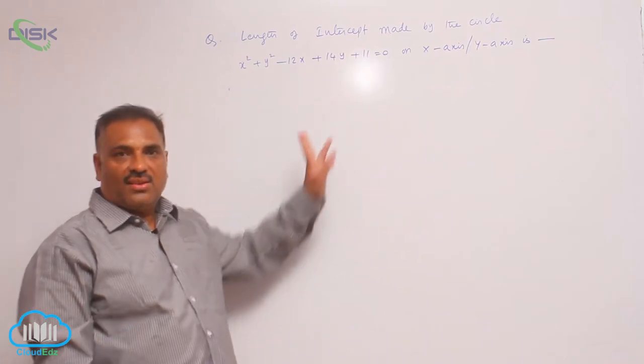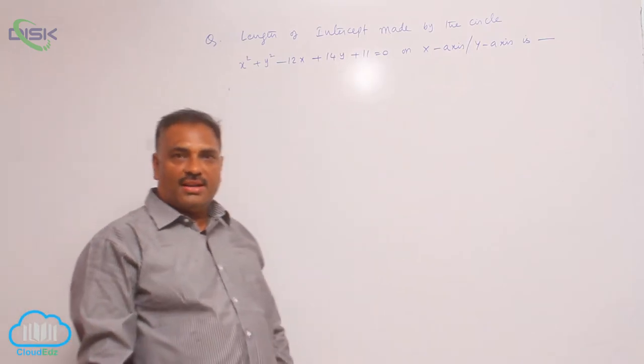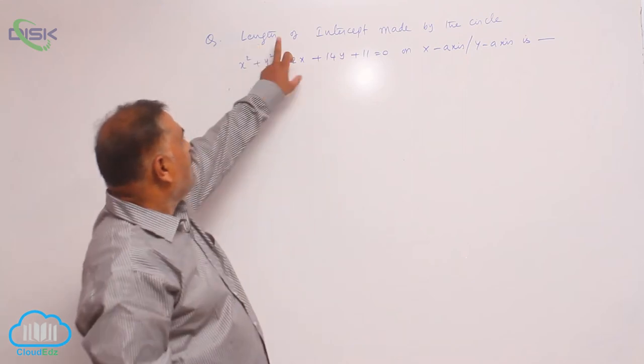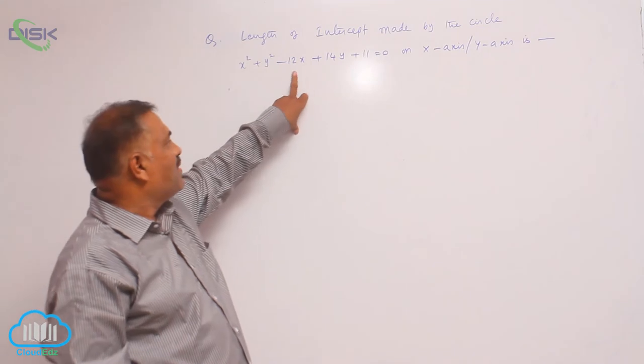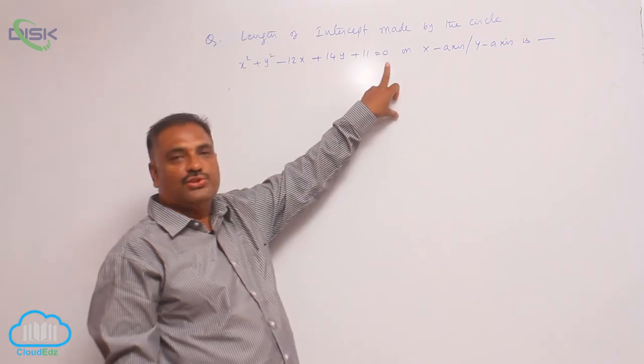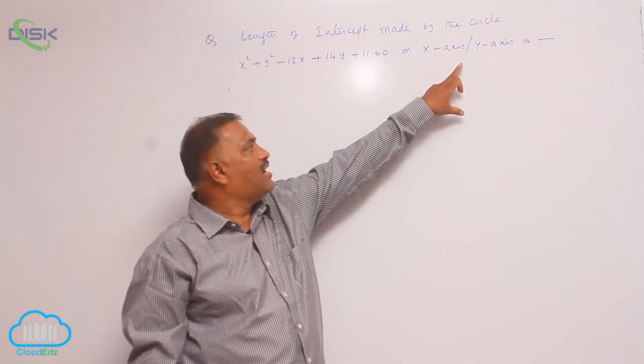We will discuss a problem based on this concept of intercept on coordinate axis. Let us consider the length of the intercept made by the circle x square plus y square minus 12x plus 14y plus 11 equal to 0 on x-axis and y-axis.